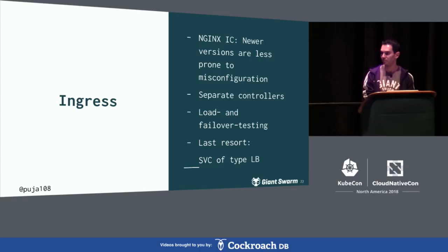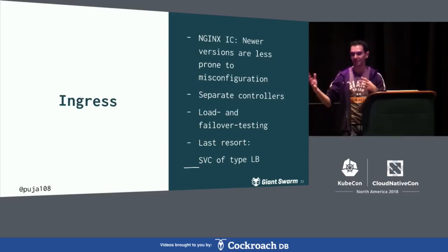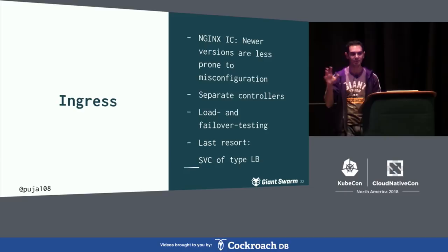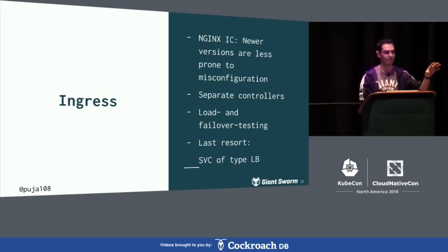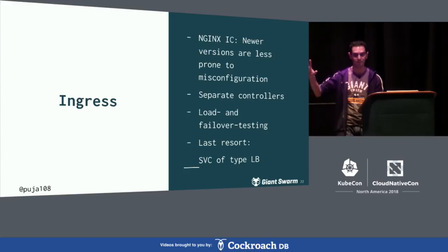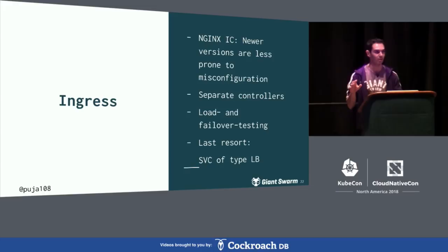For ingress: we like Nginx ingress and our customers like it because it's very configurable, everyone knows Nginx, and it has a lot of power. But with great power comes great responsibility — you can break things. If you don't want to take away features from users, run your updated versions. And sometimes think about separating controllers: in the case where a Prometheus cert was taking down production, you could have run one ingress controller for user-facing workloads and one for admin, so they can't influence each other.